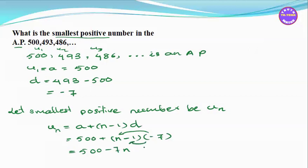So UN equals 500 plus 7, which simplifies to UN equals 507 minus 7n.